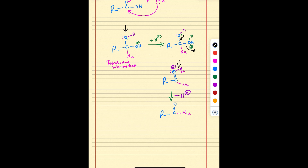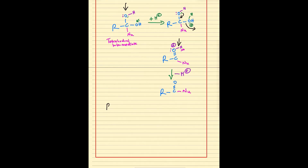So we see that under both acidic and basic conditions, you end up replacing the OH at the acyl position with the nucleophile. The reaction is: R, C double bond O, OH plus a nucleophile gives R, C double bond O, with the nucleophile now at the acyl position.